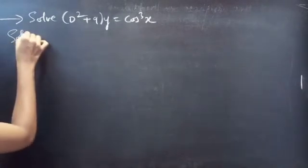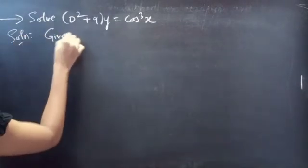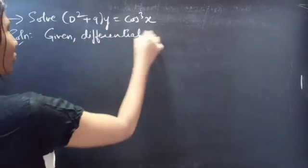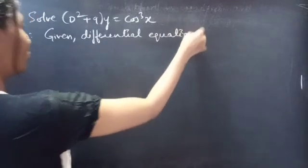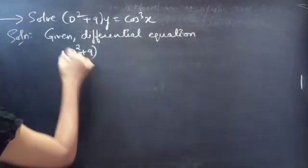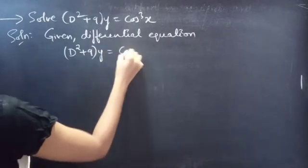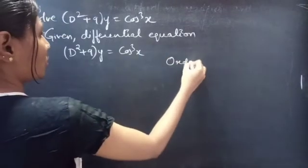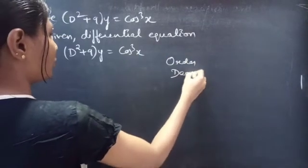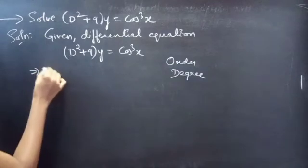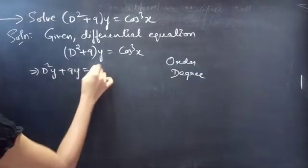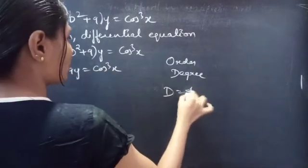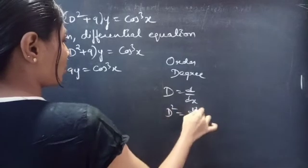Solution. Given differential equation: (D² + 9)y = cos³x. Firstly, let's find the order and degree of the given equation. We can write the given equation as D²y + 9y = cos³x. We know that D equals dy/dx, then D² is d²y/dx².